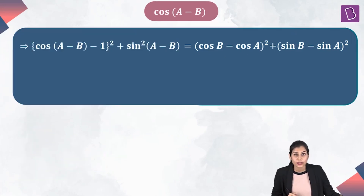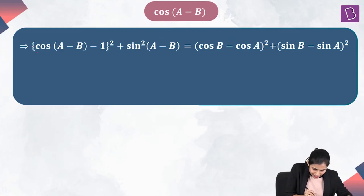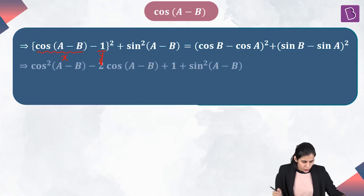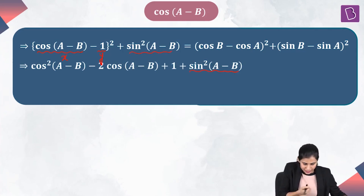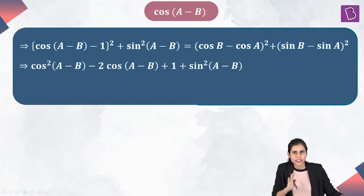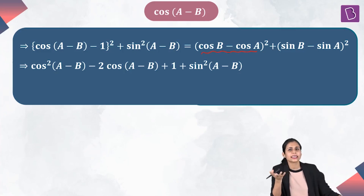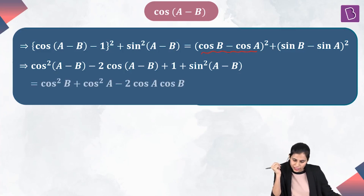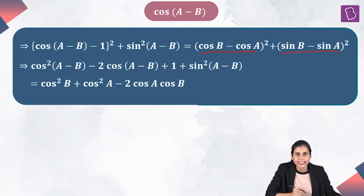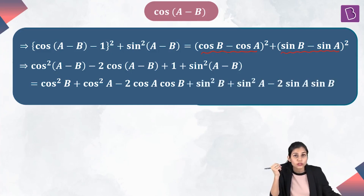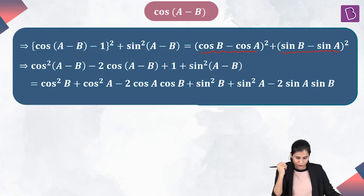After squaring both sides, both sides are free of the square root sign. On the left-hand side, cos(A−B) minus 1, squared, expands as x squared minus 2xy plus y squared, and sin squared(A−B) is kept as is. On the right-hand side, (cos B minus cos A) squared expands using the identity as cos²B plus cos²A minus 2 cos A cos B, and (sin B minus sin A) squared gives sin²B plus sin²A minus 2 sin A sin B.